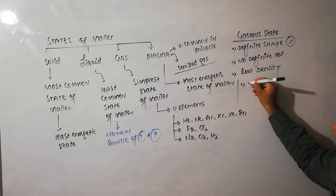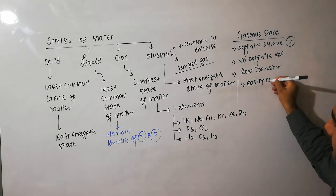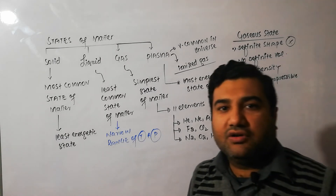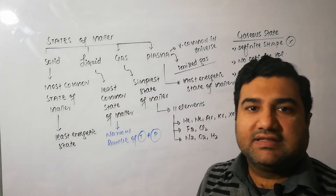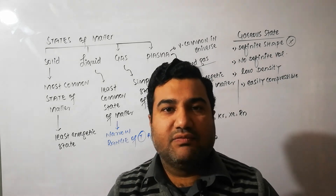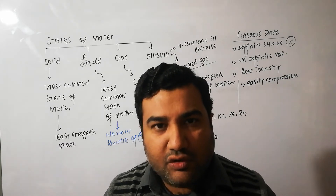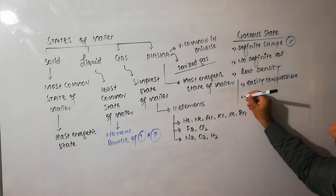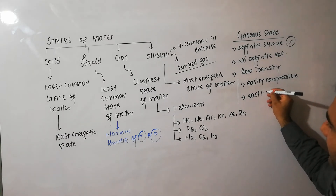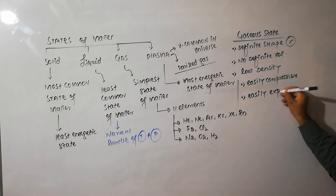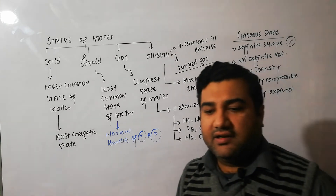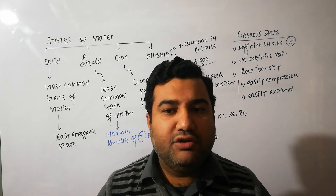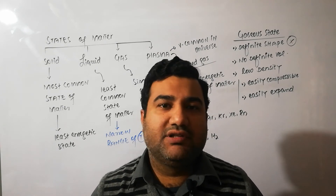Gases are easily compressible. Why are they easily compressible? Because the intermolecular distance is very large and there are huge spaces between the gas molecules, so the gas molecules can be brought close to each other and gas can be easily compressed by increasing the pressure. Similarly, gases very easily expand — again because of very little interaction and very little forces between the gas molecules. Whenever you release pressure or increase temperature, the gases expand.